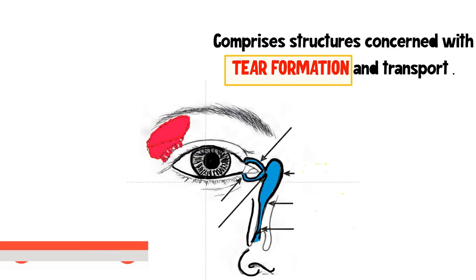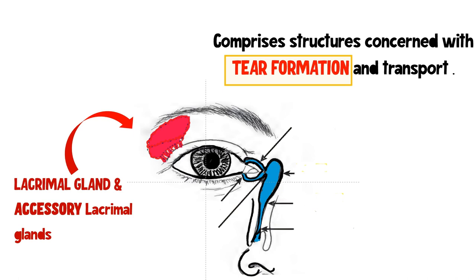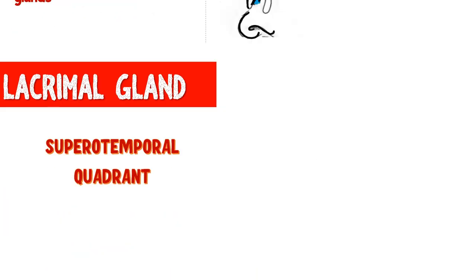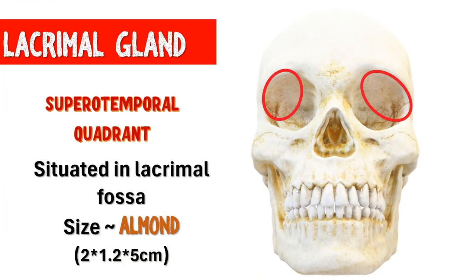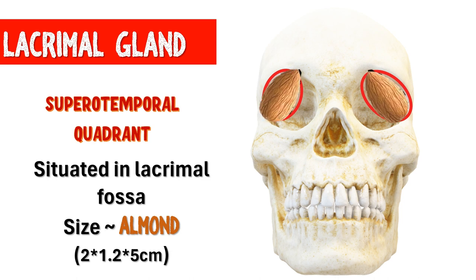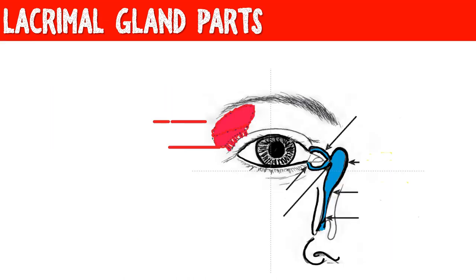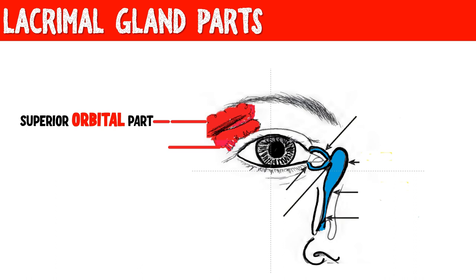First, we will talk about the structures which form the tears: the lacrimal gland and the accessory lacrimal glands. The lacrimal gland is situated in the superior temporal quadrant of the orbit in a specialized fossa called the lacrimal fossa. The size of the lacrimal gland is that of an almond. The lacrimal gland is divided basically into two parts: a superior orbital part and an inferior palpebral part. The orbital part is in close relation to the orbit, whereas the palpebral part is in close association with the eyelid.